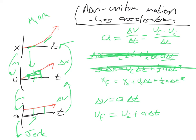There is one last equation that uses the combination of these two, and that is vf squared equals vi squared plus 2a delta x. This one comes into use quite a bit if we're caring about the displacement and how it relates to the initial and final velocity.